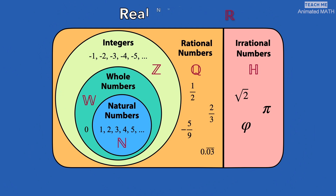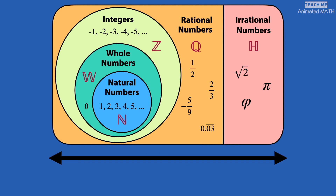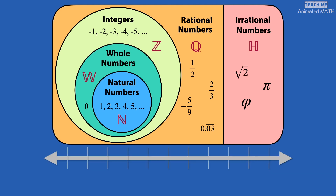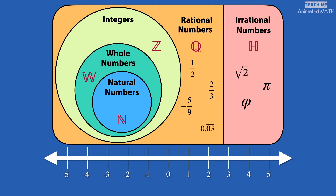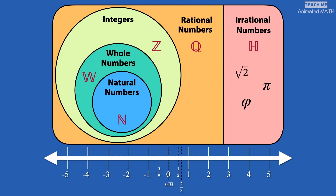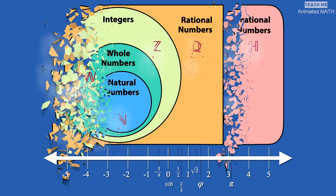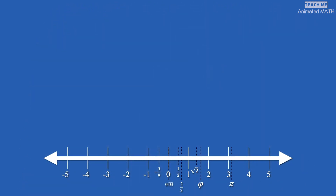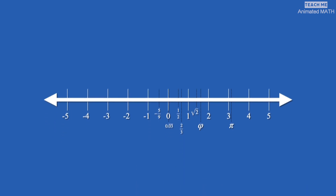We have learned about the set of real numbers. Now let's take a look at the real number line. If you haven't seen it yet, feel free to go and watch the video about the set of real numbers on this real number line playlist. All of the numbers in the set of real numbers can be placed on the real number line. This is what it looks like when filled with our example numbers.